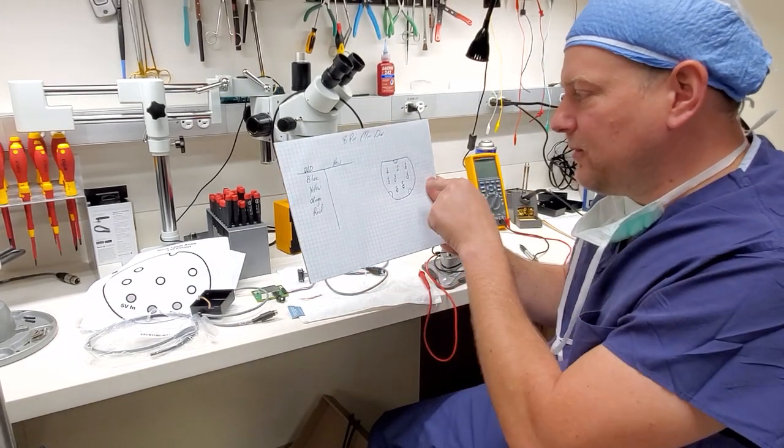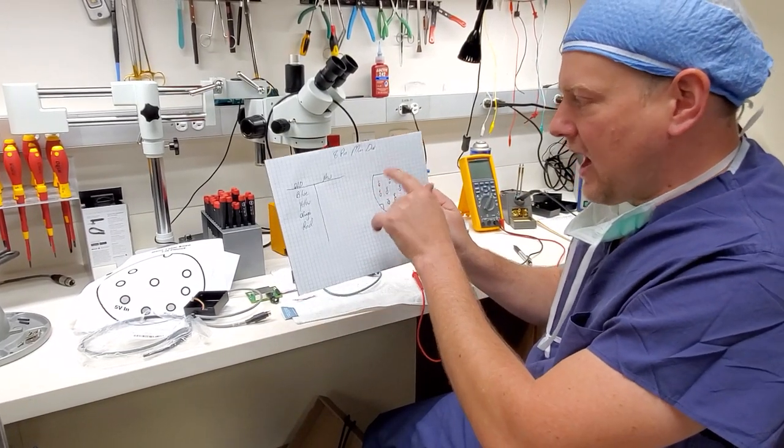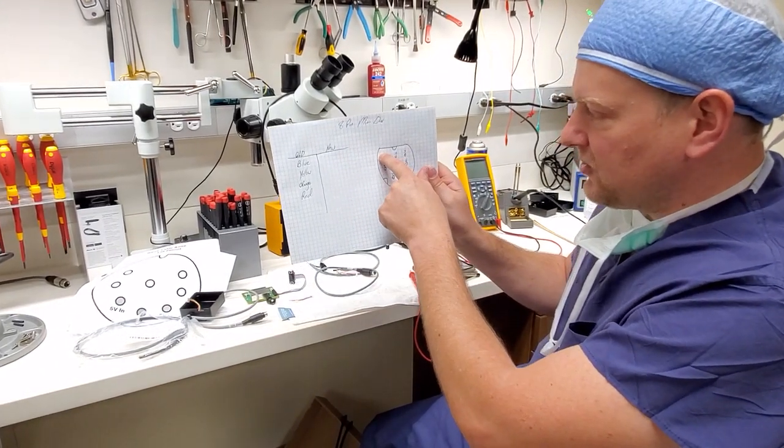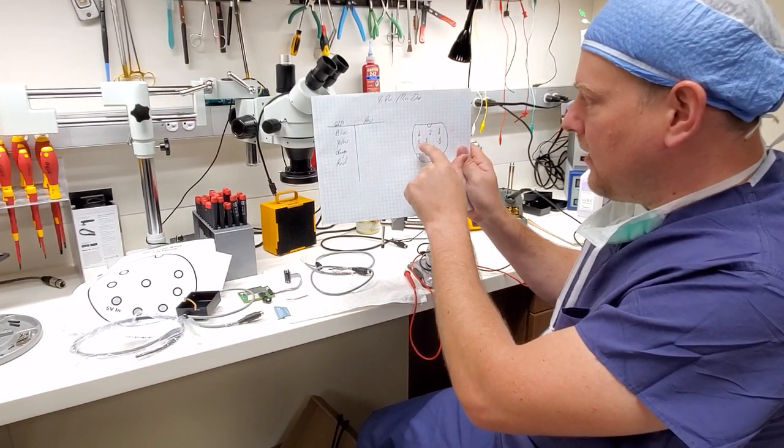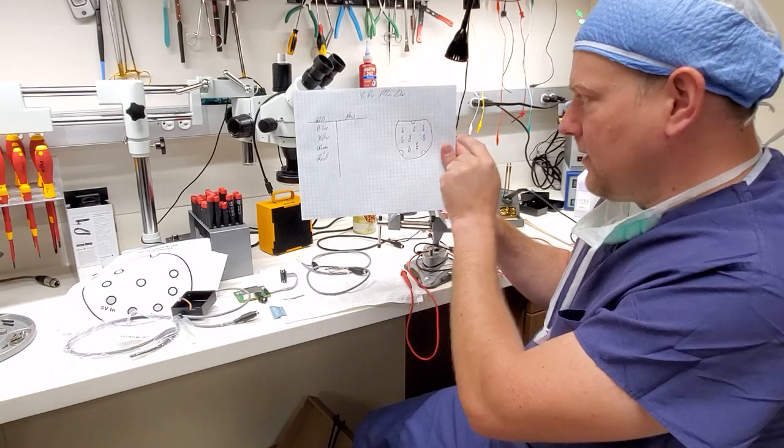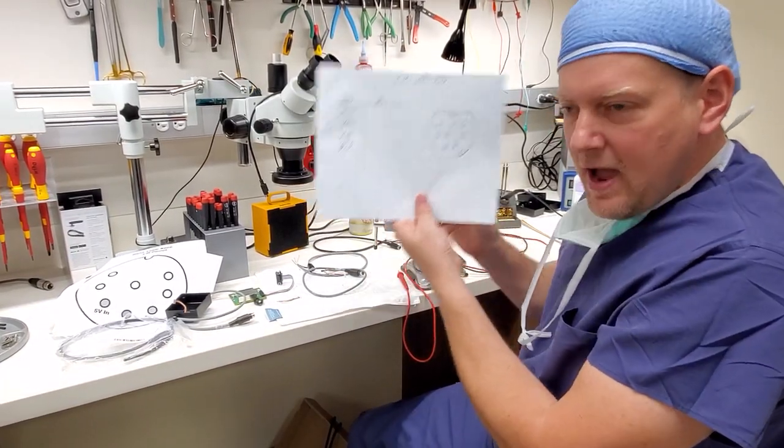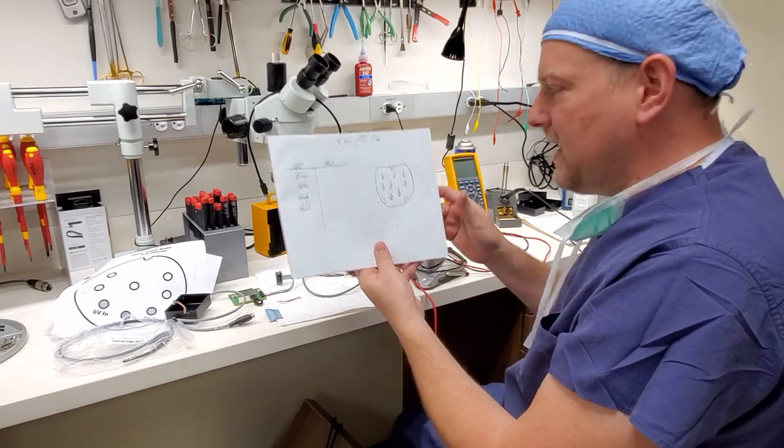The next thing you do is you label those pins. And I start at the top left and you go sequentially across the connector. So I did pin 1, 2, 3, 4 and 5 are next to each other, pin 6, pin 7, pin 8. Now I have the basis to start my pin-out.